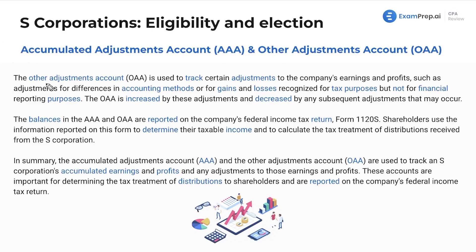The other adjustments account, the OAA, is used to track certain adjustments to the company's earnings and profits, such as adjustments for differences in accounting methods or for gains and losses recognized for tax purposes but not for financial reporting purposes. The OAA is increased by these adjustments and decreased by any subsequent adjustments. The balances in the AAA and the OAA are reported on the 1120S — we'll have a screenshot to show that, but nothing too critical.